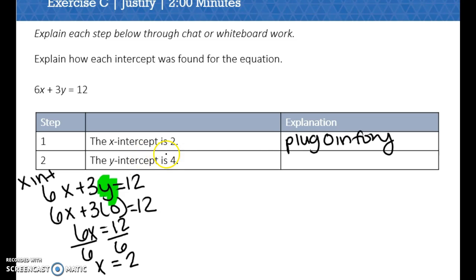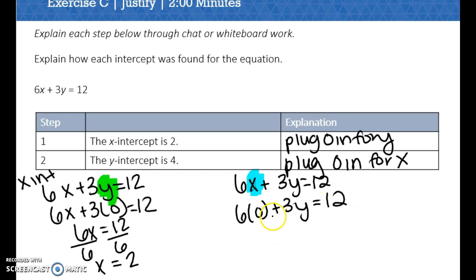Then it wants us to find the y-intercept. So how we find y is we plug 0 in for x. So 6x plus 3y equals 12. I am going to replace my x value with a 0. So 6 times 0 plus 3y equals 12. 6 times 0 is 0, so I end up with 3y equals 12. We can divide both sides by 3. So y equals 4. So there's my explanation.